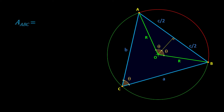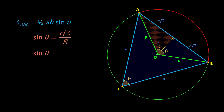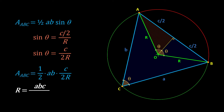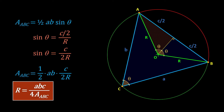To derive the length of the radius, write the formula for the area of the triangle: (1/2)·AB·sin(Theta). From the right triangle, sin(Theta) = (C/2) / R, so sin(Theta) = C / (2R). Substituting into the area formula and cross-multiplying R to the left, the right side becomes the product of sides A, B, and C over 4. Cross-multiplying the area of triangle ABC to the right gives R = (A·B·C) / (4·Area ABC). That is the radius of the circumscribing circle.